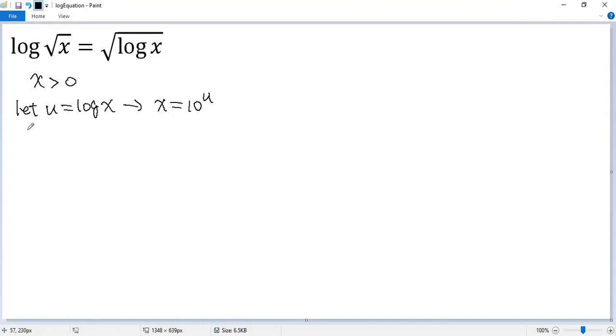Now plug in. So we get log square root of x. Now x equals 10 to the power of u. The right side, square root of u. Now we can write left side as 10 to the power of u and then the power of half equals square root of u.